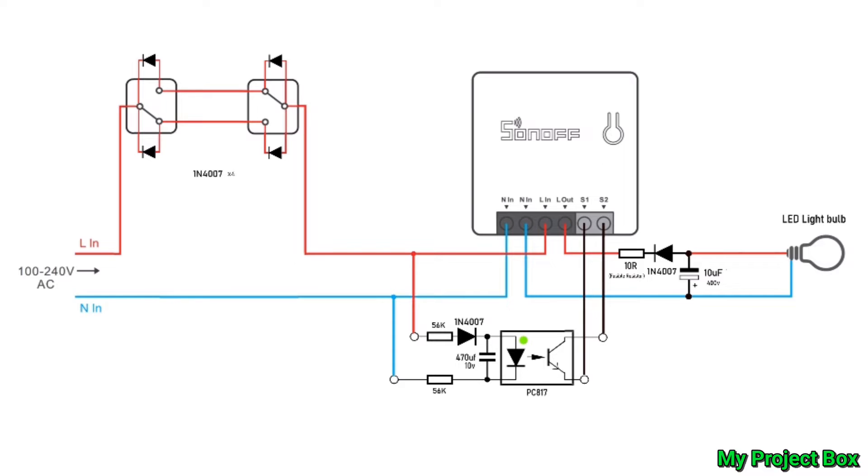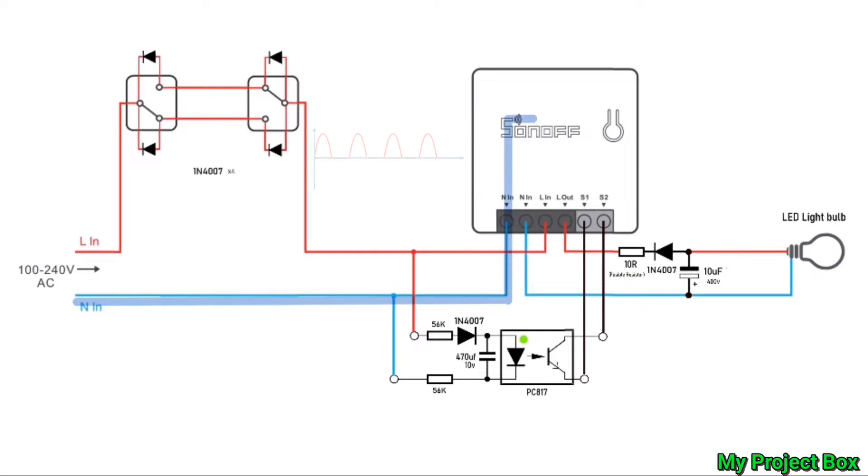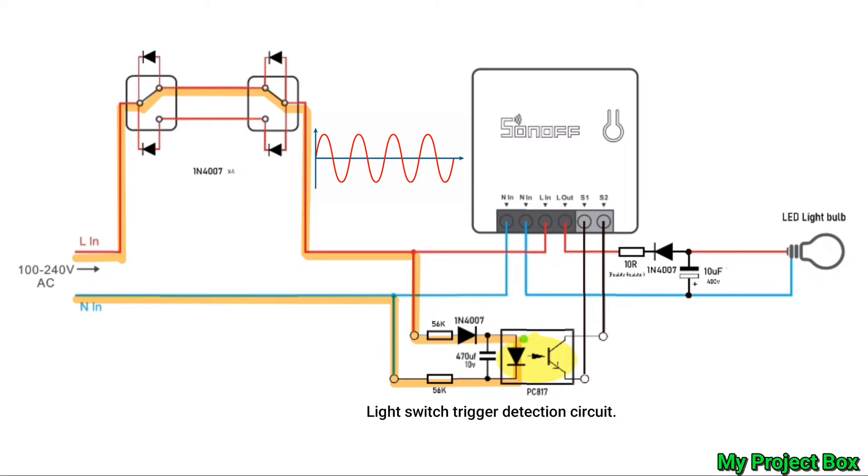With the diodes in this configuration it simply doesn't matter which positions the switches are in. There's always a way for the diodes to pass half-wave to power the Sonoff or they bridge the diodes out and the light detection circuit can activate.